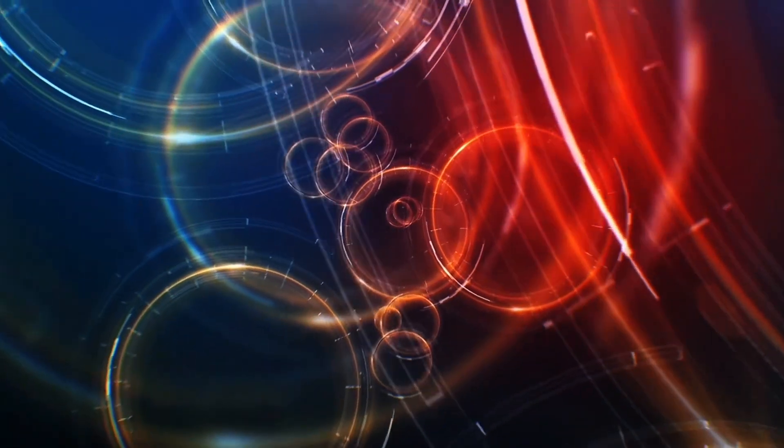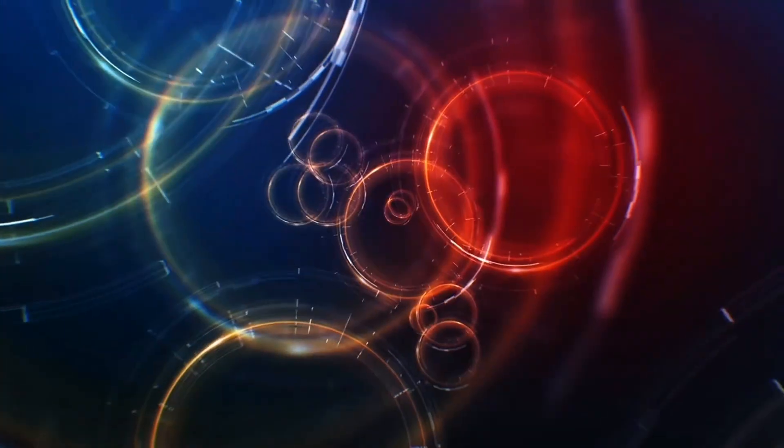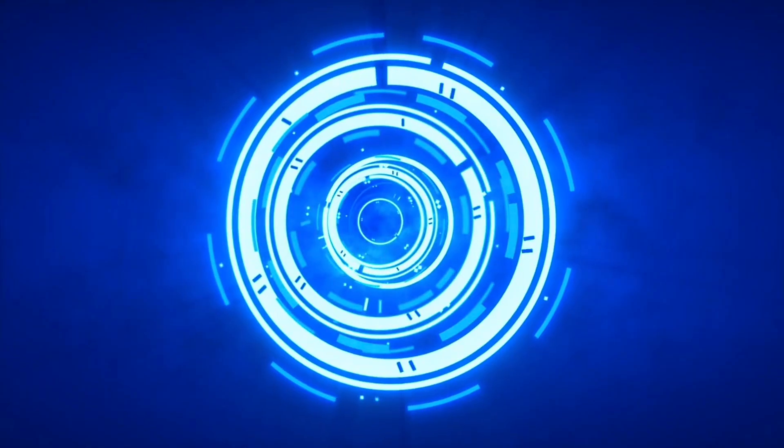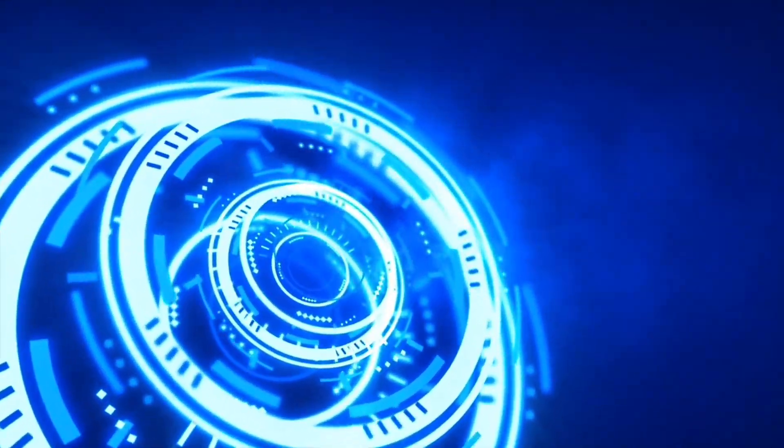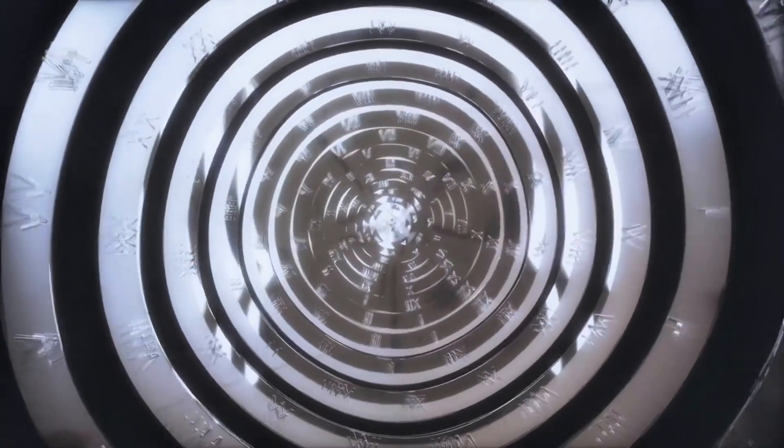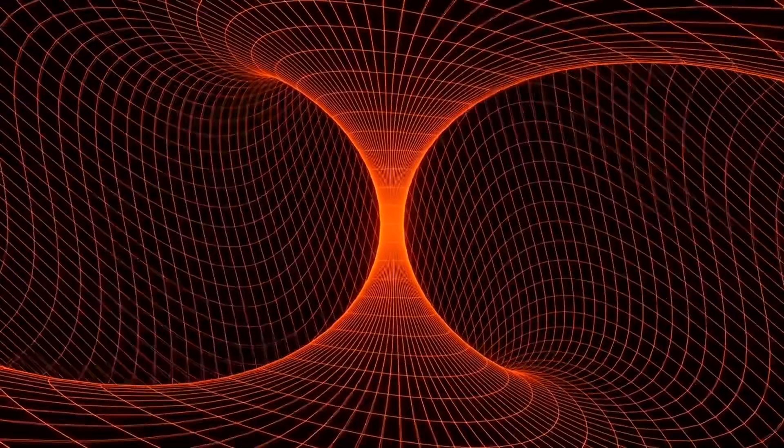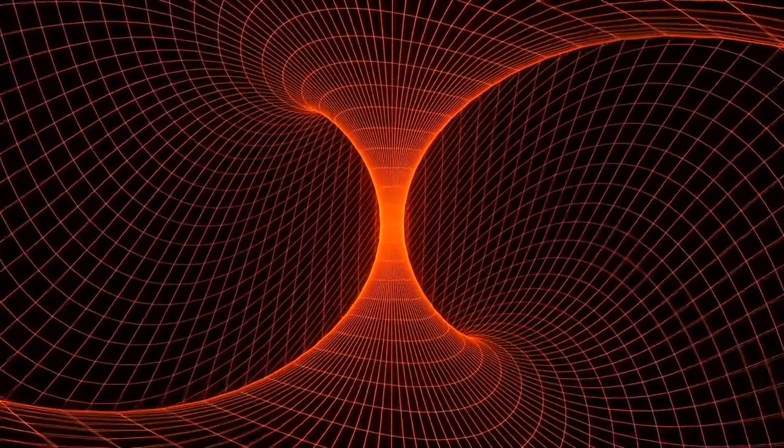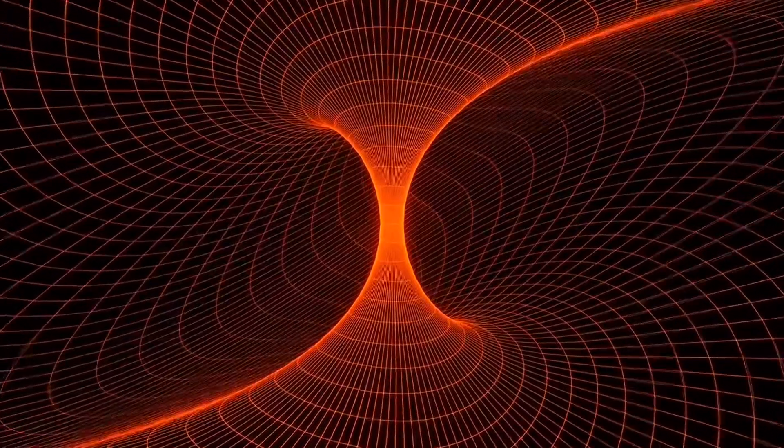But entropy and causality aren't the only forces shaping time. Time isn't as rigid as we think. And to see that, we have to go deeper, into Einstein's theory of general relativity. Here's the idea in simple terms. Time doesn't move the same for everyone. It stretches, bends, and slows down depending on how fast you move and how close you are to gravity.